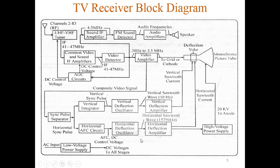This is the block diagram of the TV receiver. The antenna part is here, followed by the tuner section. Then the common video amplifier and IF amplifier with automatic gain control part is there. The video detector part is there. The sound amplifier complete part is there. The video amplifier part is there, then the vertical scanning part, horizontal scanning part, synchronous pulse separator, low voltage power supply, and high voltage power supply. This is the complete diagram and we will discuss in detail.